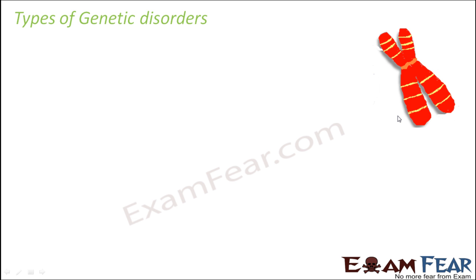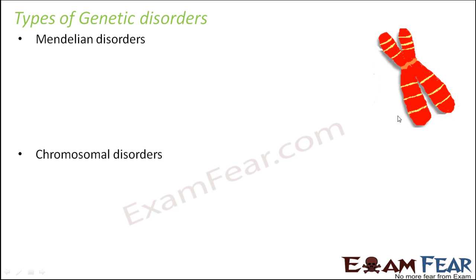We will make use of pedigree charts when we talk about the different types of genetic disorders, and we will see how a pedigree chart can show that a genetic disorder might be present in a family. Broadly, there will be two categories of genetic disorders: Mendelian disorders and chromosomal disorders. Mendelian disorders have something to do with Mendel's rules of inheritance, while chromosomal disorders involve a change in the structure or number of chromosomes.